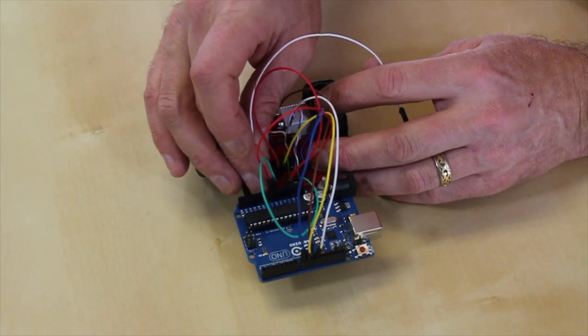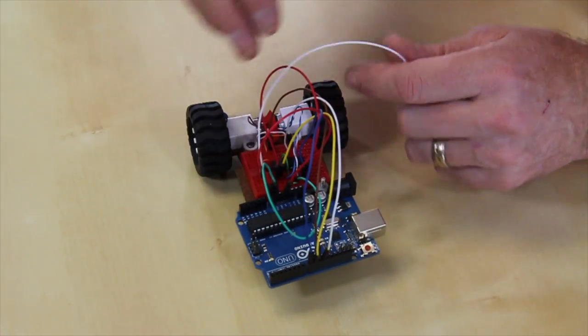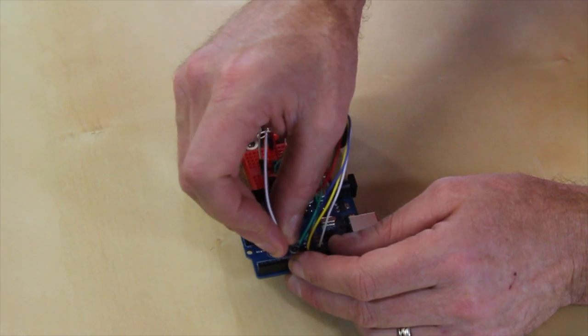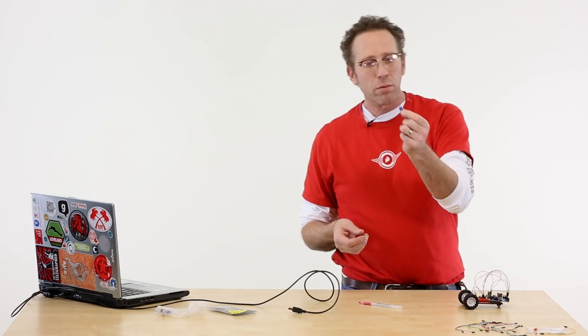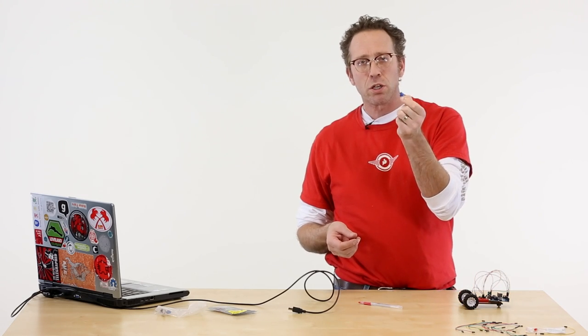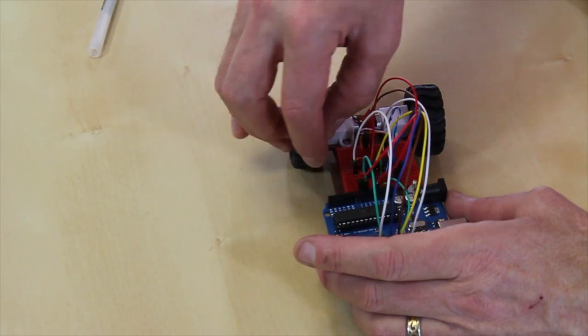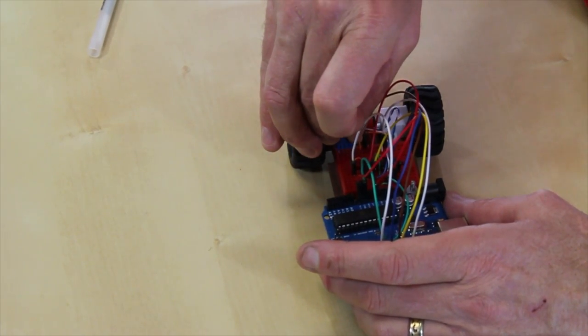And I've got a pulse width coming out of pin 3 or pin 6, I believe. Now I'm using a simple analog read and what I'm going to start with is this potentiometer. So I can vary the speed depending on how I turn the potentiometer.